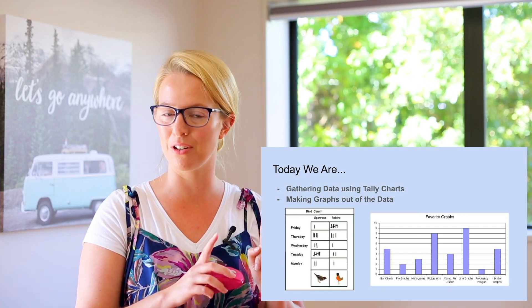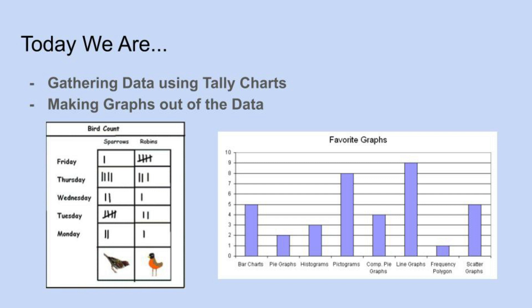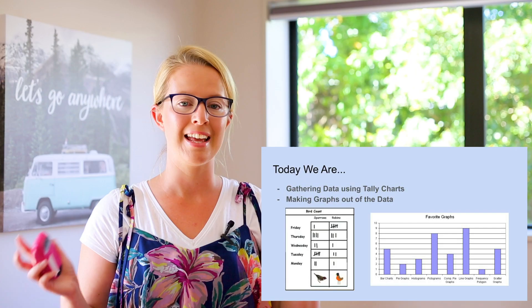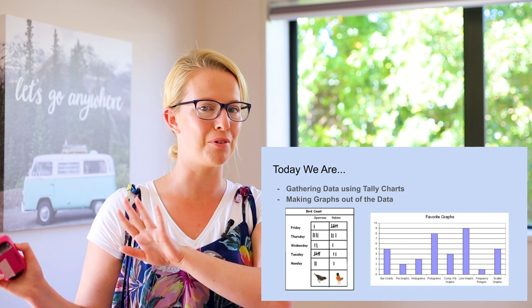On the other side, there's a bar graph — also called a column graph. It's showing different types of graphs that people like. Down the bottom it has the names of the different groups, and up the side it has numbers. The bars or columns go up to each number, showing the count for each group. These are just quick examples — we're going to go into more detail with tally charts and bar graphs.